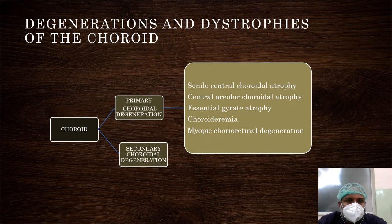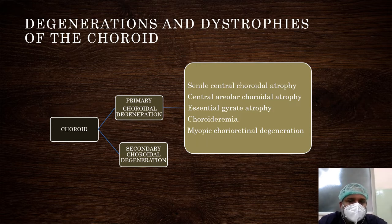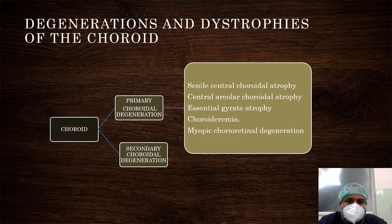The degenerations and dystrophies of the choroid can be classified into two types: primary choroidal degenerations and secondary choroidal degenerations. Primary is without any specific cause, and secondary is due to inflammatory causes occurring in the choroid. The primary choroidal degenerations include: senile central choroidal degeneration, central areolar choroidal atrophy, essential gyrate atrophy, choroidal emia, and myopic choroidal degeneration. We will see each one in detail.